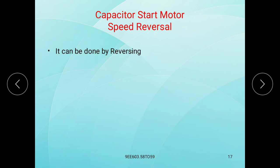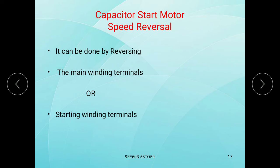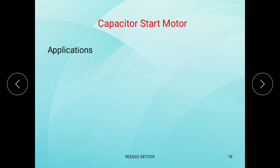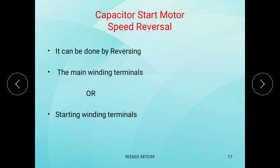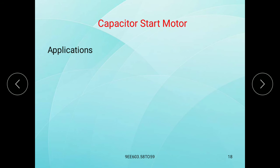The direction of rotation of the capacitor start motor can be reversed by reversing the main winding terminals or the starting winding terminals — one set of terminals should be connected in the reverse direction.